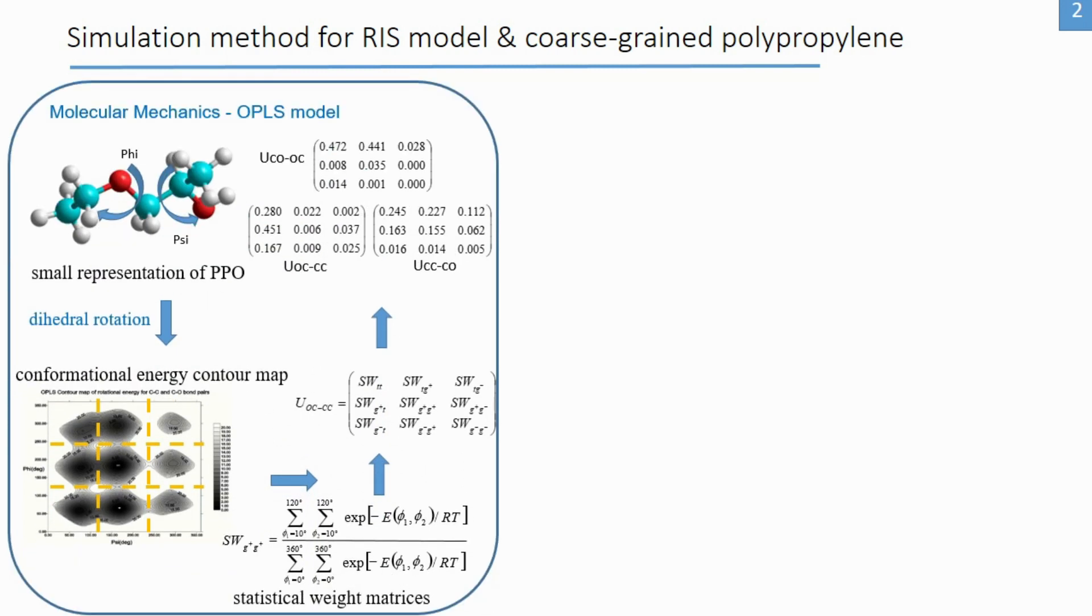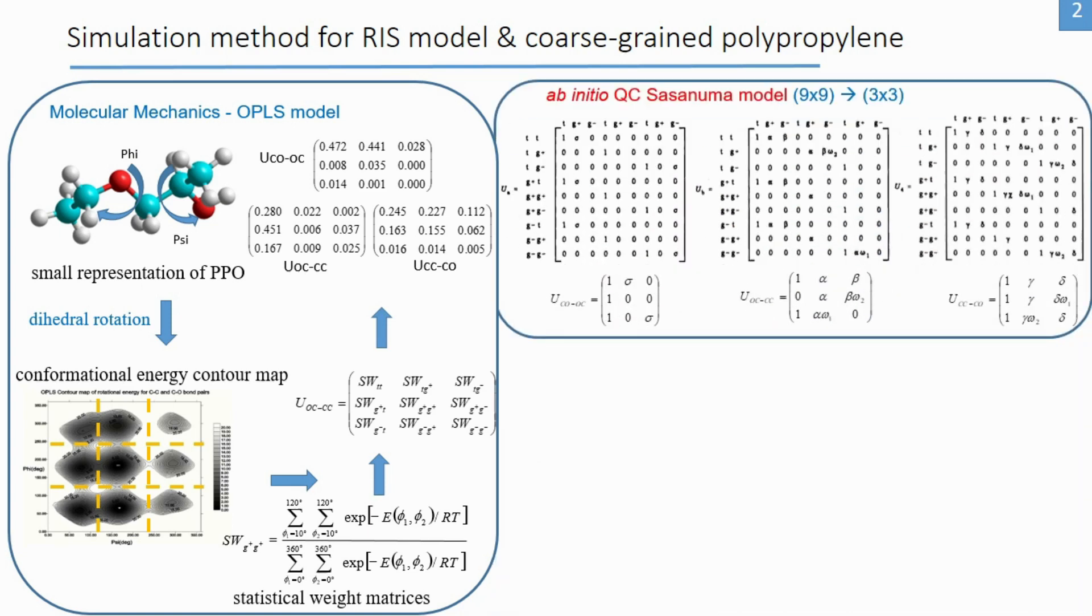For MM method, we use small representative segment of PPO to generate the conformational energy contour map and then determine the non-canonical form of statistical weight matrices. For ab initio QC calculation, we use PPO by Sasanoma but include only the first and second order interaction, resulting in reduction of original 9x9 matrix into 3x3 dimension.